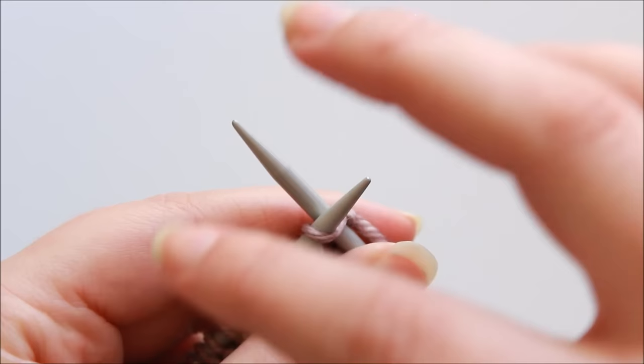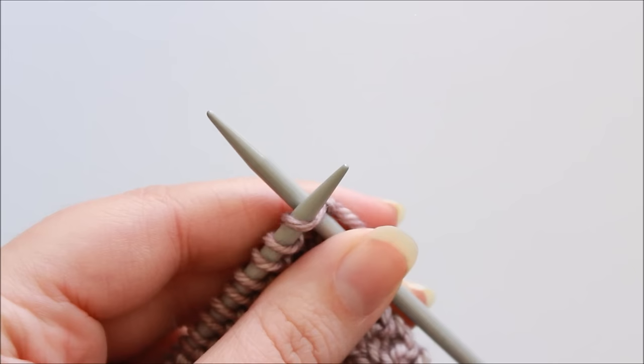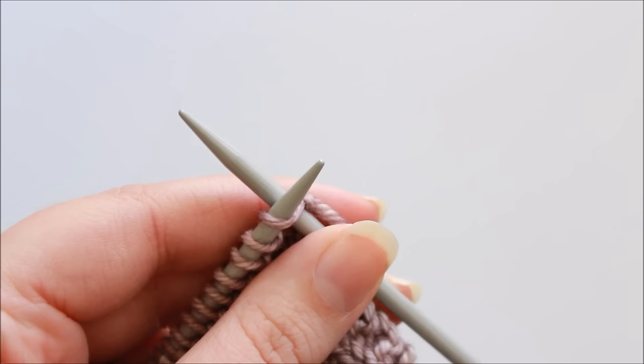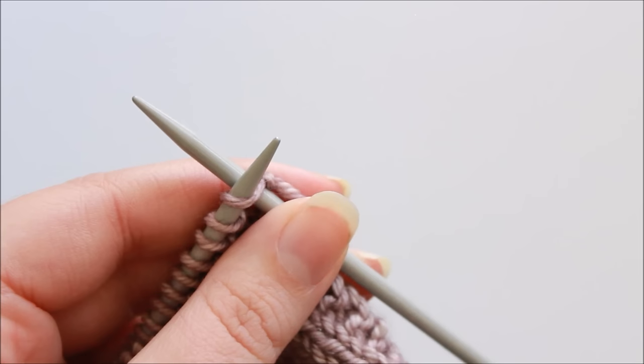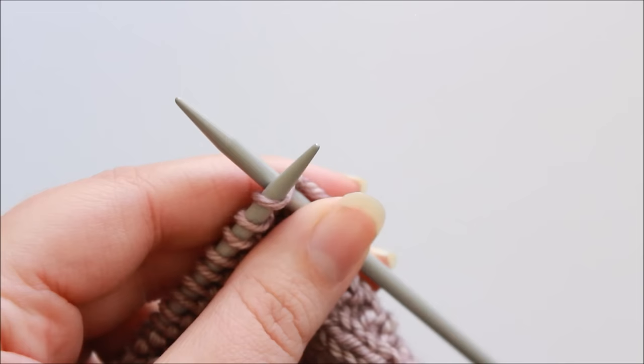So your written instructions for this technique will generally read something like the following: cast on two stitches using knitted cast on method, knit one, knit one then pass the first work stitch over the last, do this three more times to bind off four stitches in total, and then slip the stitch on right hand needle back to left hand needle and repeat until all stitches have been bound off. So we'll see what that looks like.